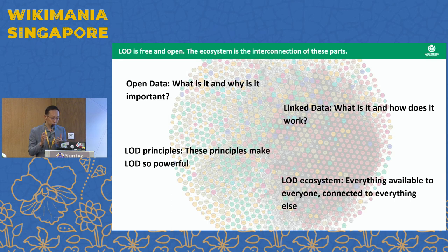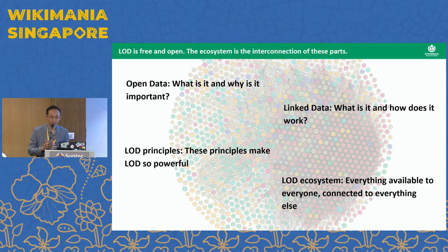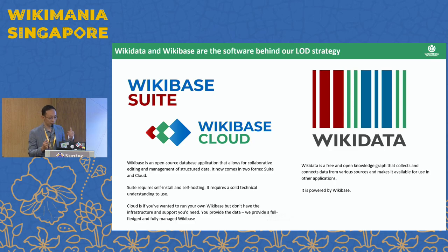The linked open data ecosystem is a way of sharing and connecting data on the internet, so that not only people, but more importantly, machines and computers can easily use and reuse it. There are many benefits to this — for example, increased visibility, increased accessibility, and improved data quality on the linked open data web.